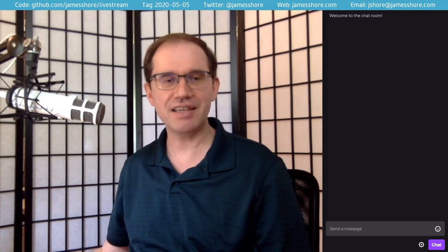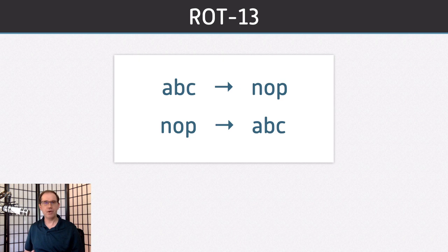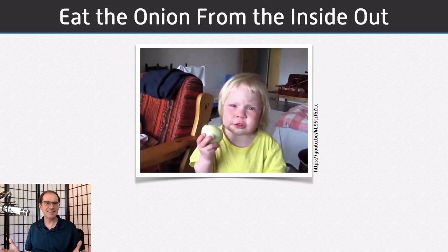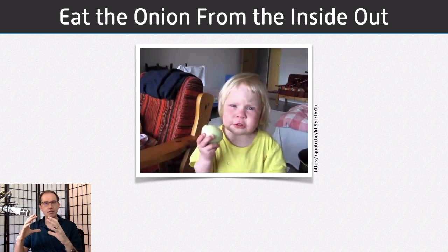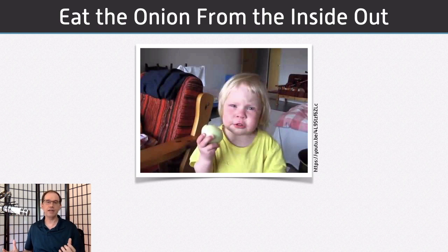With that out of the way, let's get back to our challenge. We're going to build a ROT13 algorithm using small steps and test-driven development. I like to think of it as eating an onion from the inside out, because problems are like ogres and onions — they have layers. Down at the juicy core of every problem is something that everything depends on. If we can find that and build it first, we can build the next piece out from there, and the next, until we've eaten the whole onion.